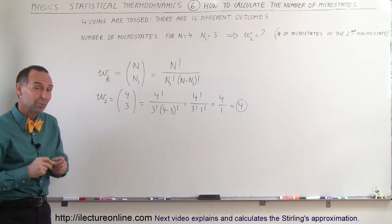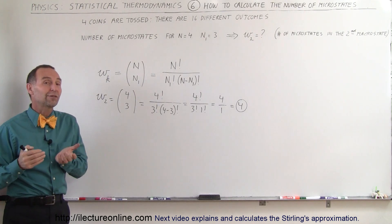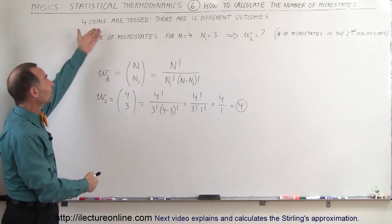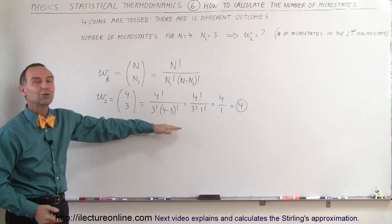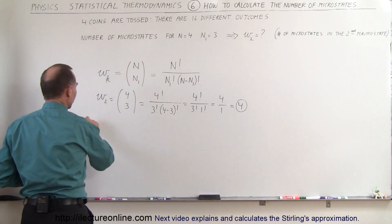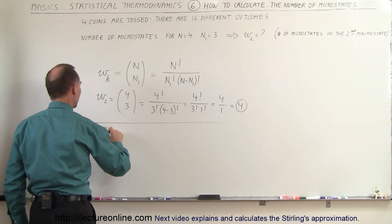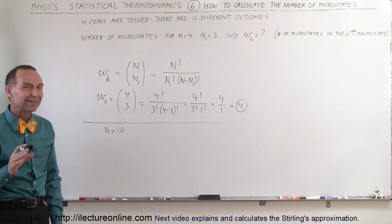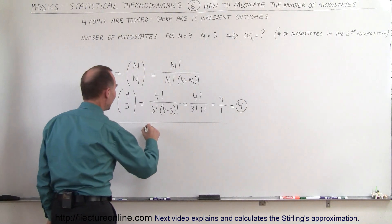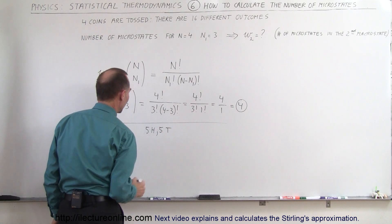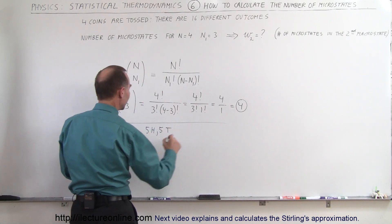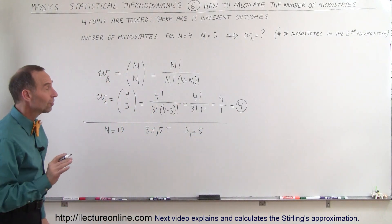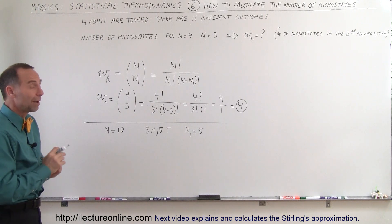Can we use that equation for larger numbers? Of course — that's why we have it. For something as simple as 4 coins we probably don't even need it. But what if we have 10 entities? We throw 10 coins and want to know the number of microstates where we have 5 heads and 5 tails. In other words, n equals 10, so n sub 1 equals 5. How many microstates are there in that particular microstate?